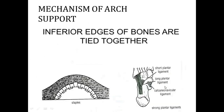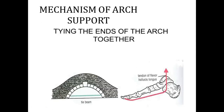In the mechanism of arch support, the inferior edges of the bones are tied together — stapled together — with the help of various ligaments, like the short plantar ligaments, long plantar ligaments, and calcaneonavicular ligaments. These are the strong plantar ligaments.